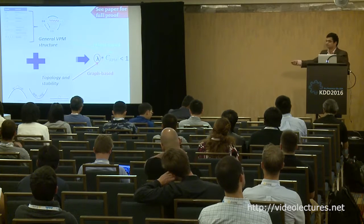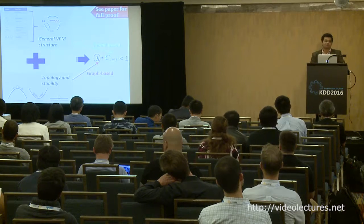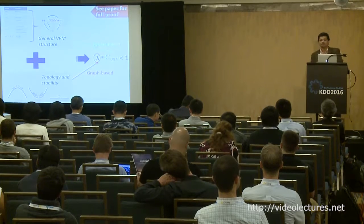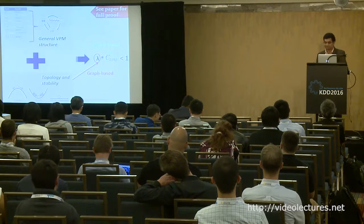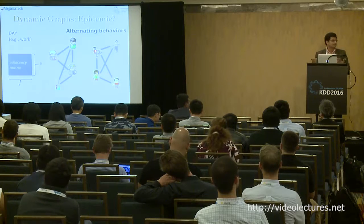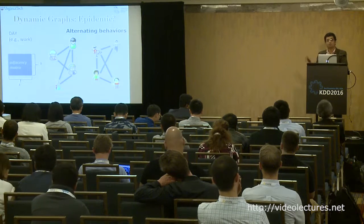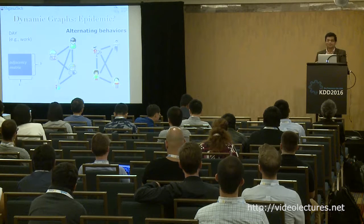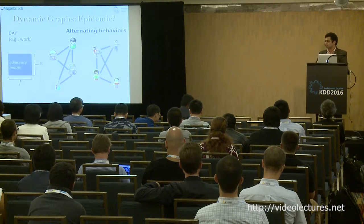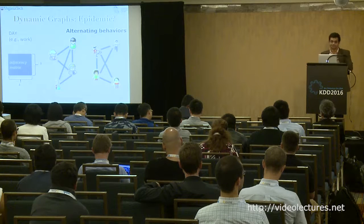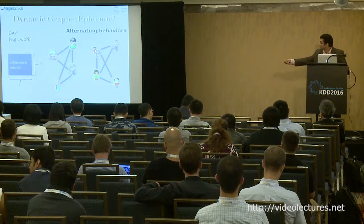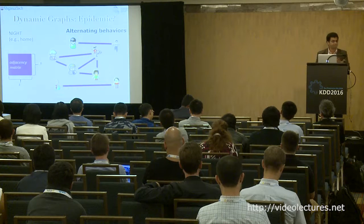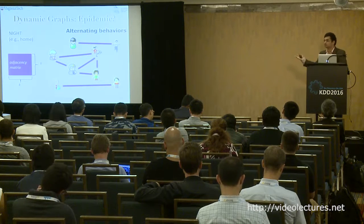Next, how do you extend this to dynamic graphs? Dynamic graphs mean the contact network changes over time. You're in this tutorial from 1 to 5 PM, then you go for dinner — the contact network changes. In a day, you might have a work adjacency matrix (parents at work, children at school); at night, a different network as everyone comes home. You have adjacency matrices A1 to AT corresponding to different snapshots, assuming they repeat (day, night, weekend, vacation, semester, etc.).